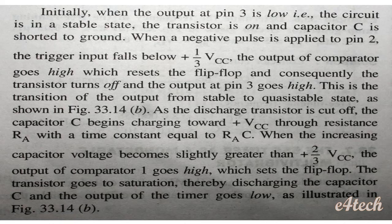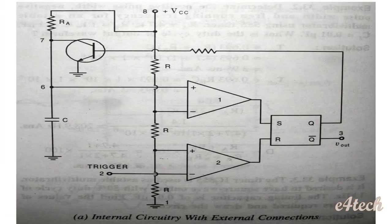Initially, pin 3 output (Vout) is in the low state — the circuit is in its stable state. When a trigger pulse is applied at pin 2, the output goes high. The flip-flop is reset, Q goes high and Q-bar goes low. Vout becomes high, Q output is high, and the transistor turns off.